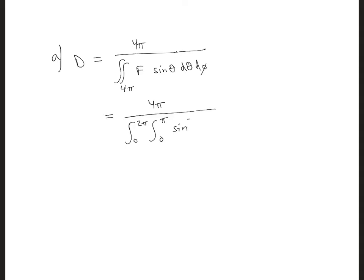F is sine squared, so all together we're going to get sine cubed θ dθ dφ. And we know that 0 to 2π of dφ is 2π. And we're given that 0 to π of sine cubed θ dθ is that expression.